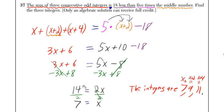What up? Sum of three consecutive odd integers. If the first integer is x, then the next one is x plus 2. Think about that for a minute. If the first one was 3, the next one would be 5.